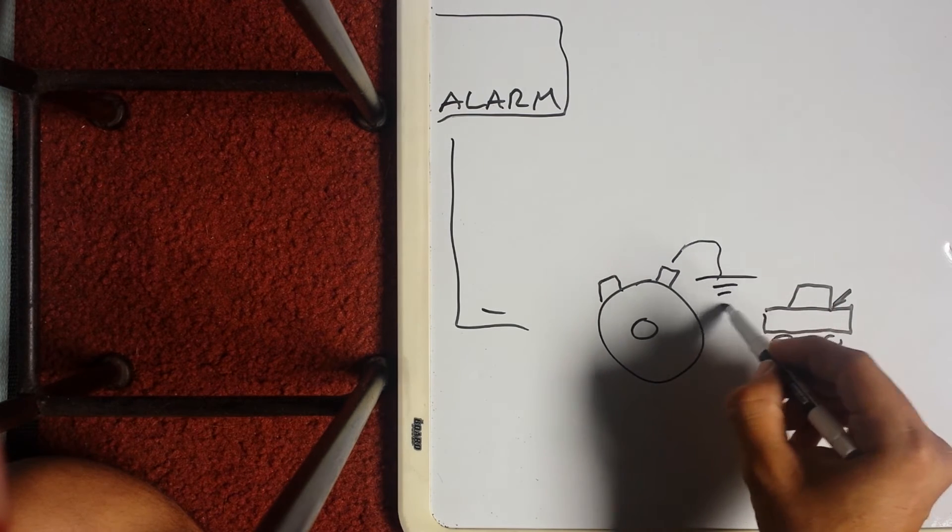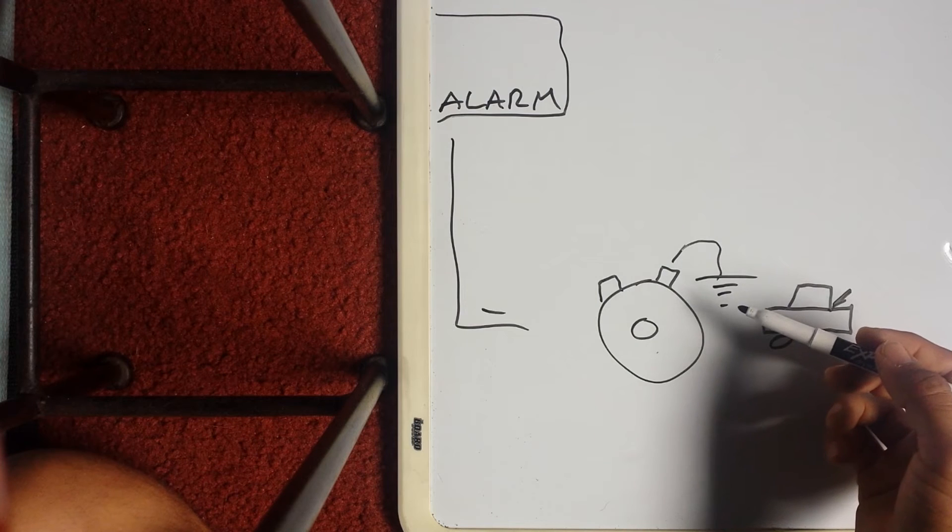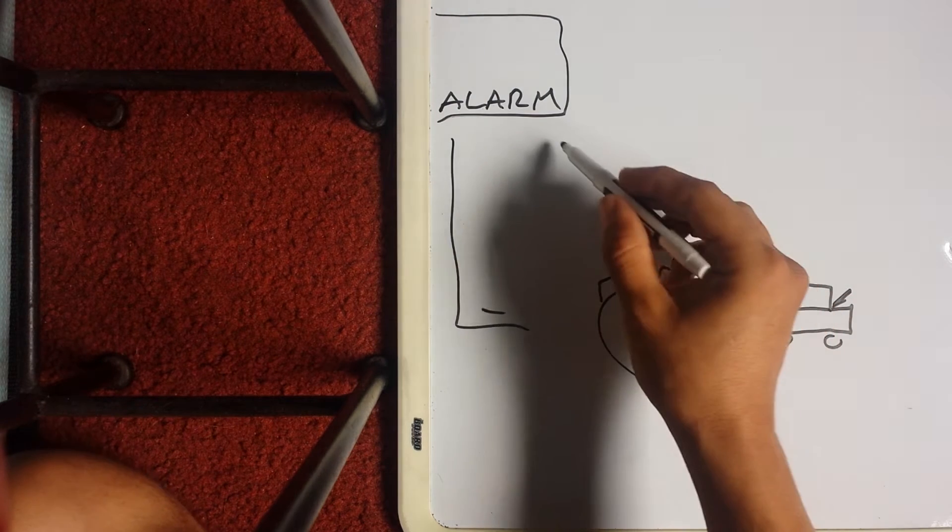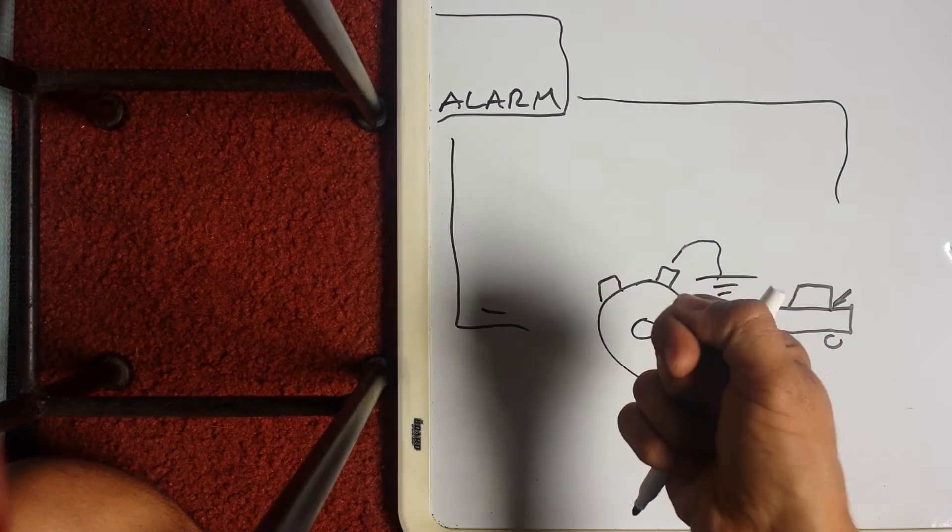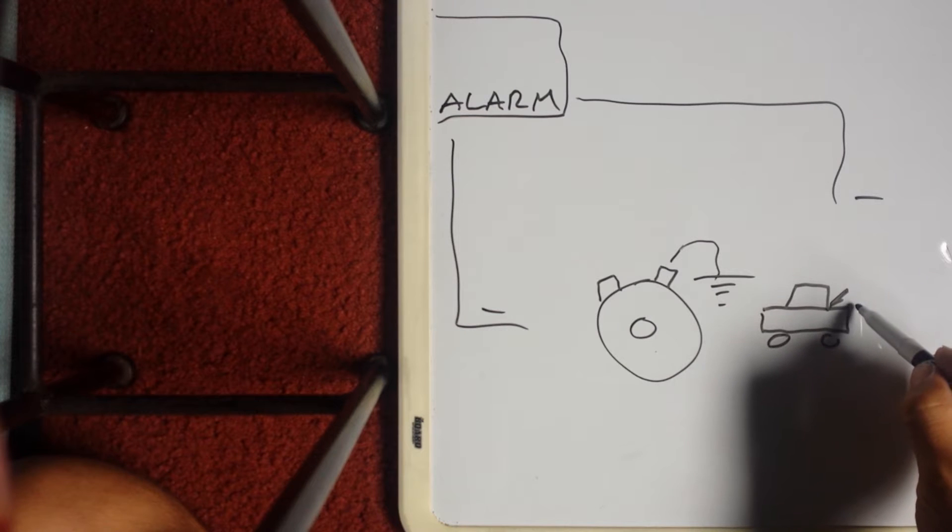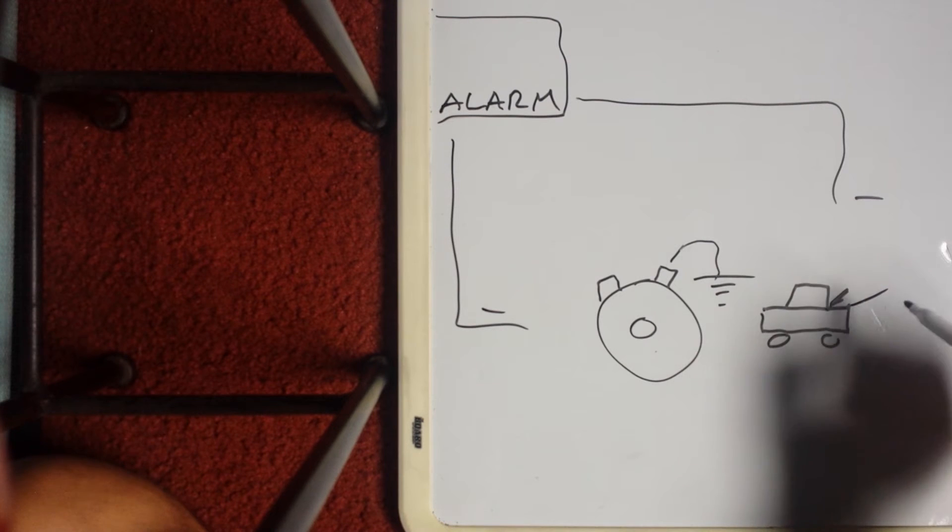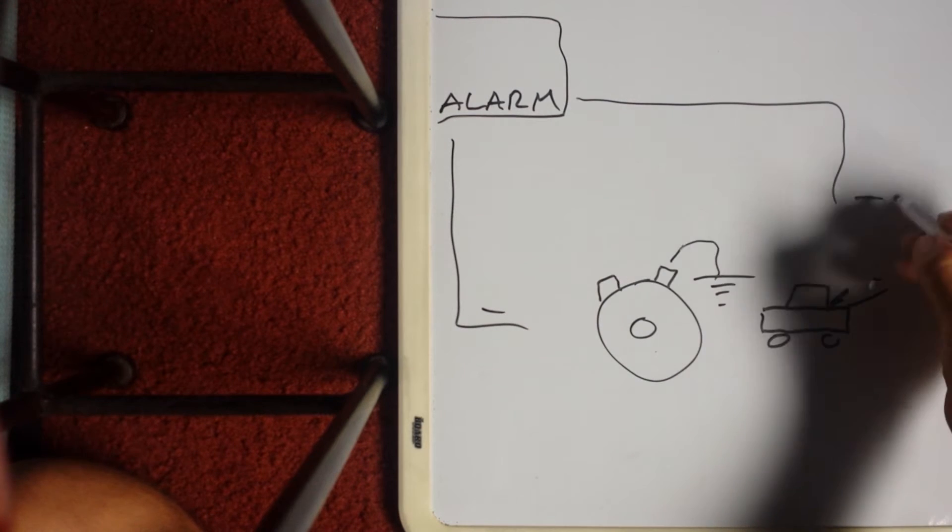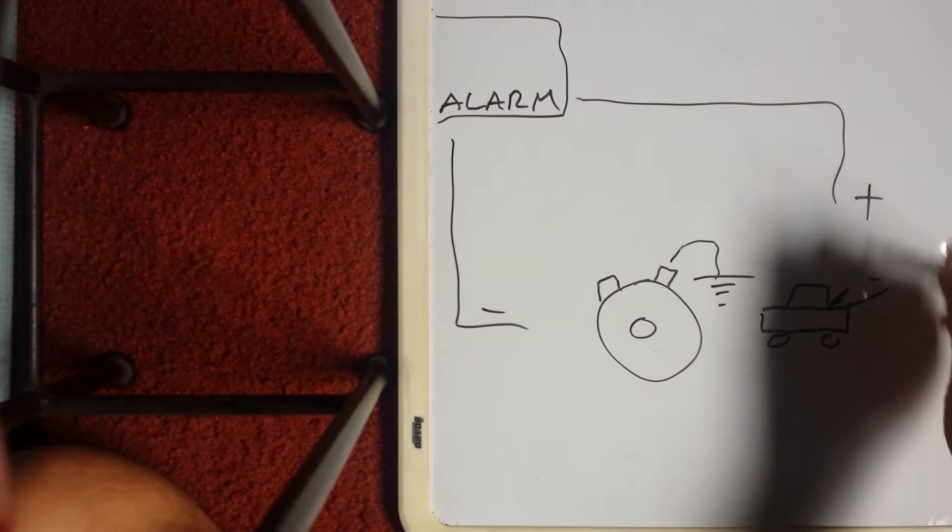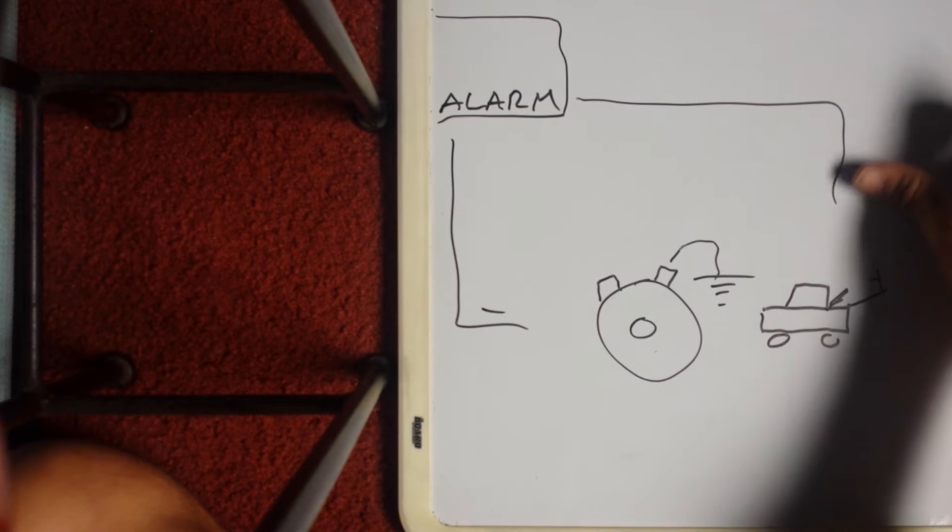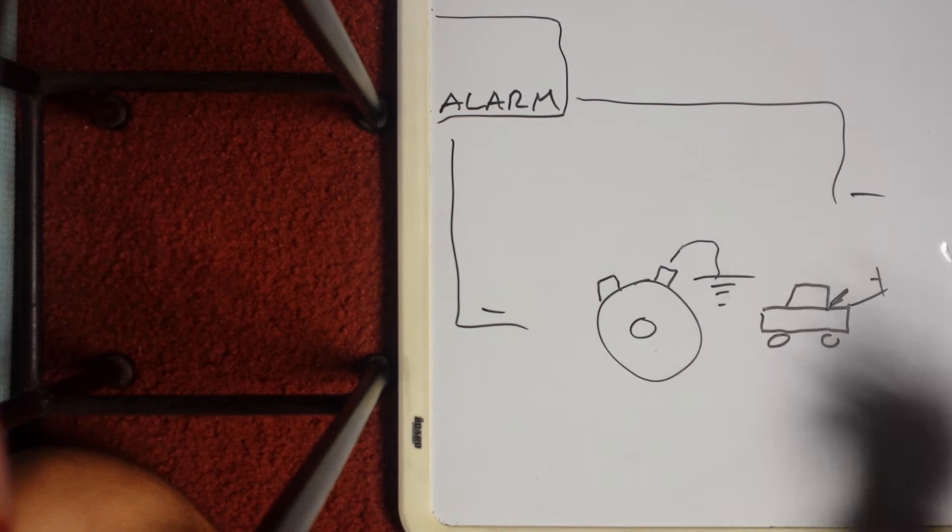Now some vehicles like European vehicles rest at negative. If you send it a negative, nothing's going to happen. Or your trunk wire resting at negative, you send it a negative, nothing's going to happen. You need to send it a positive in order for that trunk to pop.